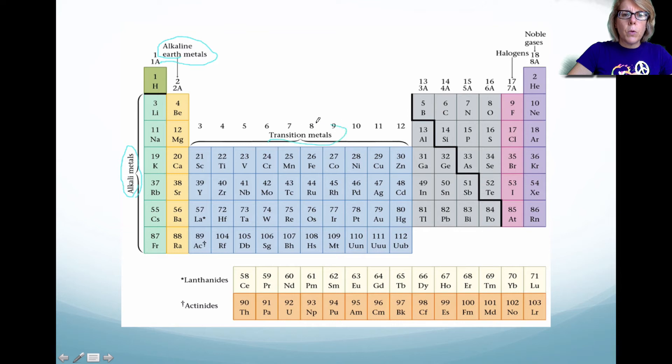The blue is transition metals. Now the gray section here, there really isn't a name necessarily for these individual columns. And I don't expect you to know them. So we're going to ignore them for now.